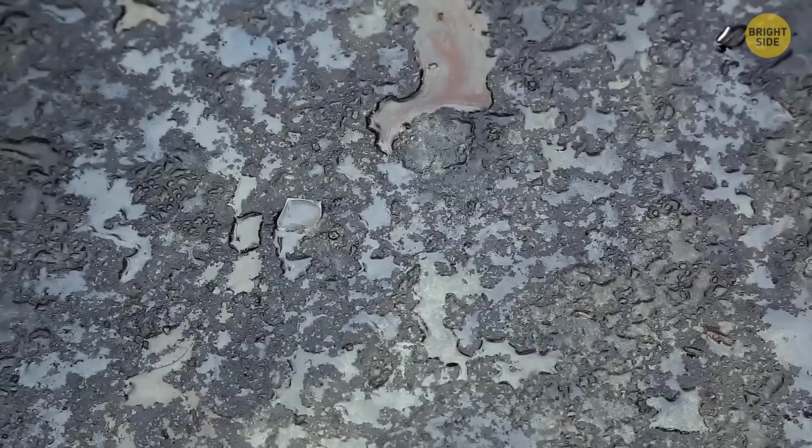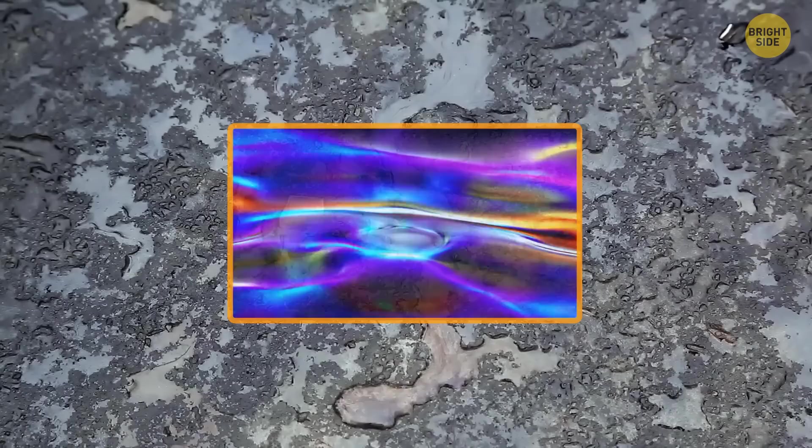Gasoline looks like a rainbow in a puddle because it can't mix with water. It forms a thin membrane over it. When light reflects from it and the water at the same time, you've got a rainbow.